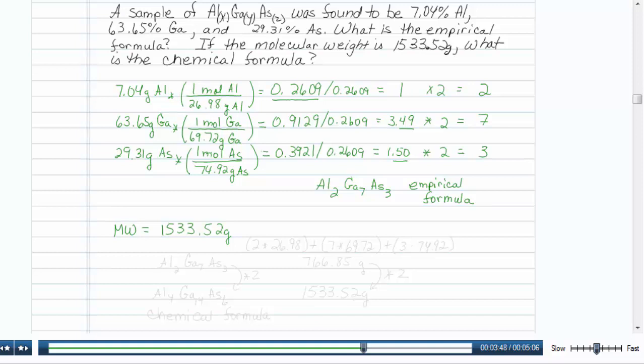Let's look at our material that is our empirical formula. 2 aluminums, 7 galliums, 3 arsenics. Let's figure out the mass of this. That would be 2 times 26.98 plus 7 times 69.72 plus 3 times 74.92.